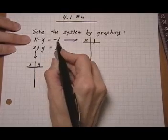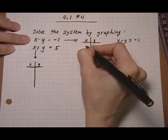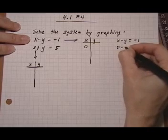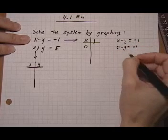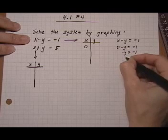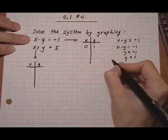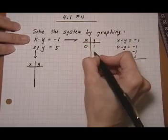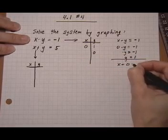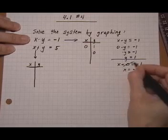So starting with x minus y equals minus one, let's go ahead and put in x is zero. So if x is zero, I get zero minus y equals minus one, or minus y equals minus one. Dividing both sides by negative one, we get y equals one. So x is zero, y is one. If I do y is zero, I get x take away zero equals minus one, and that just gives me x is minus one.